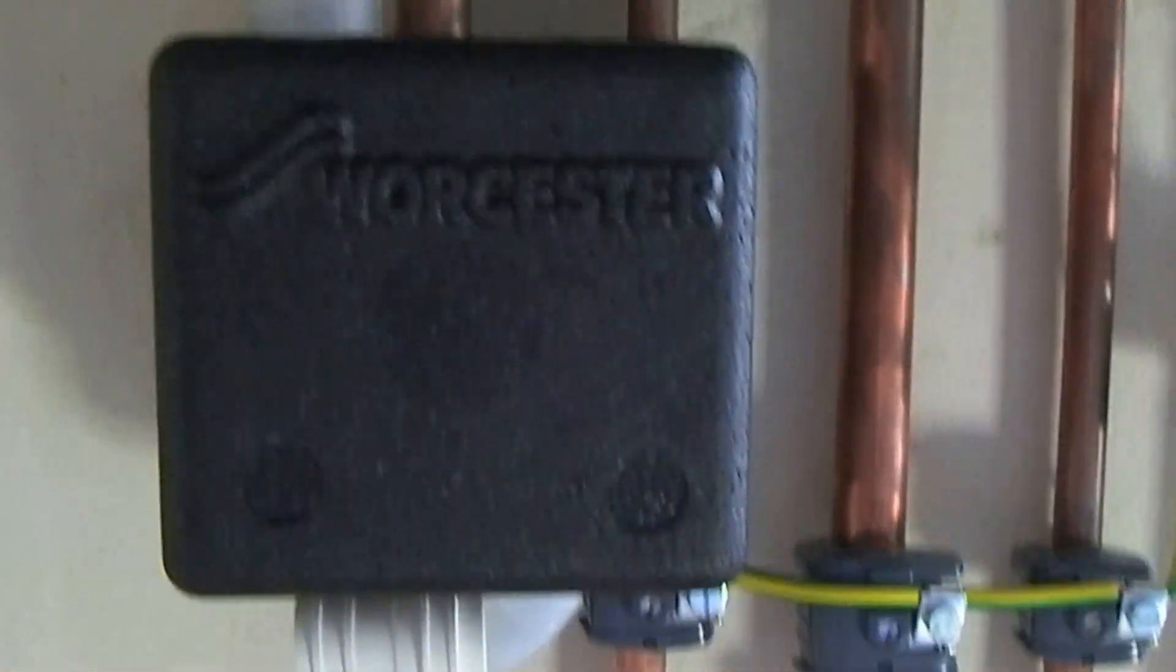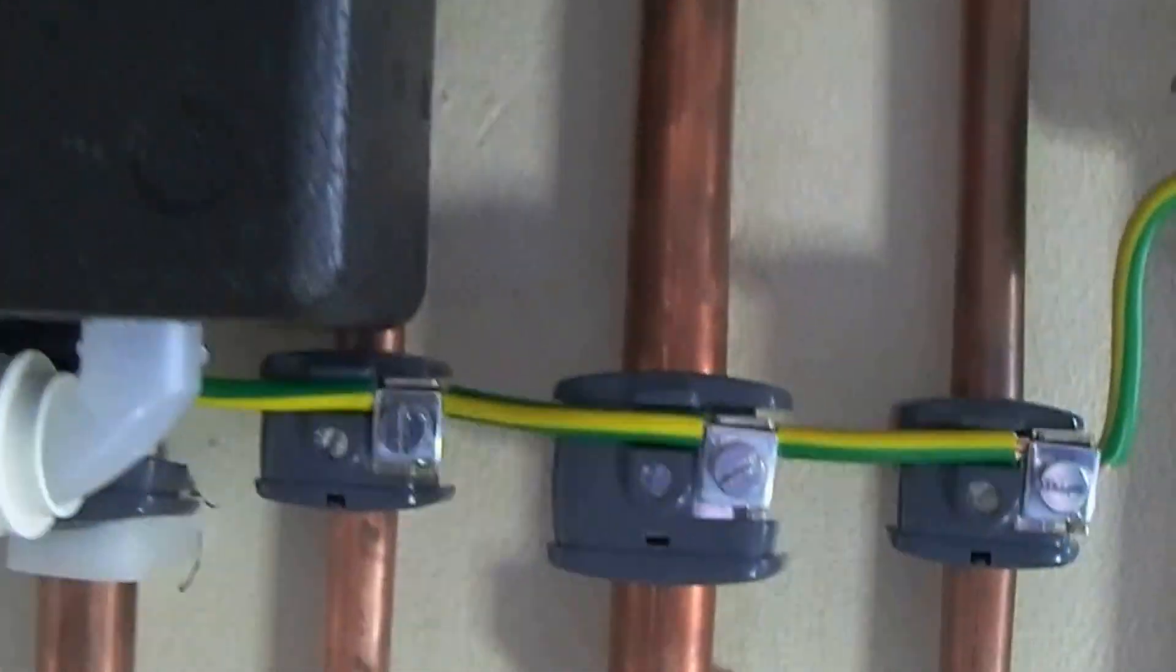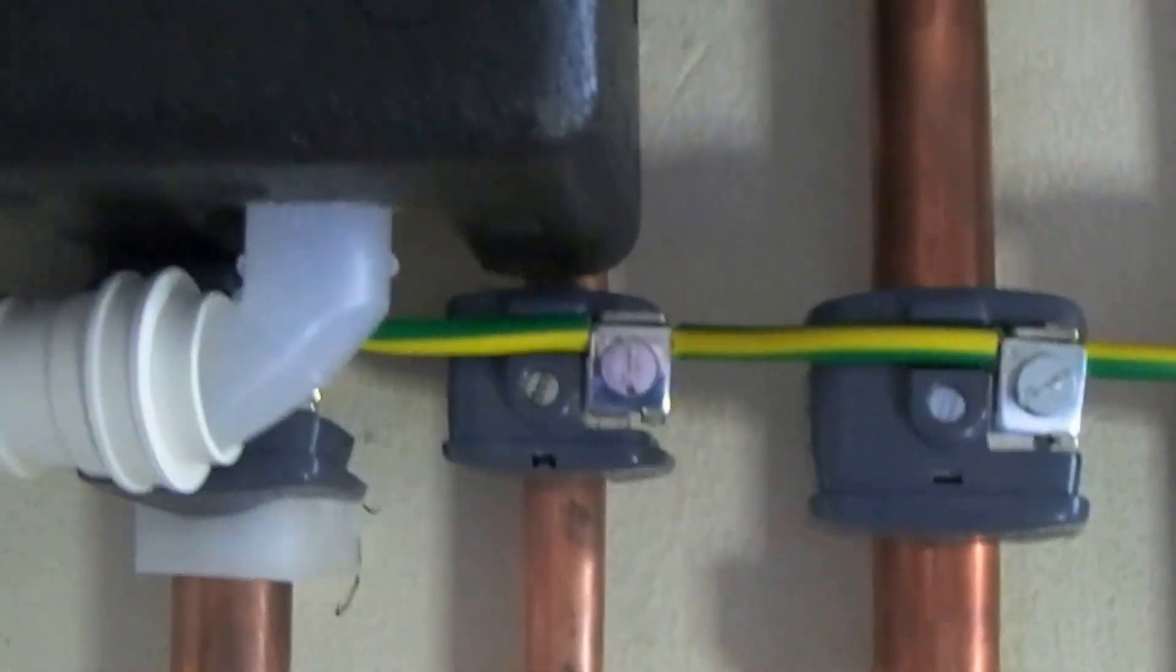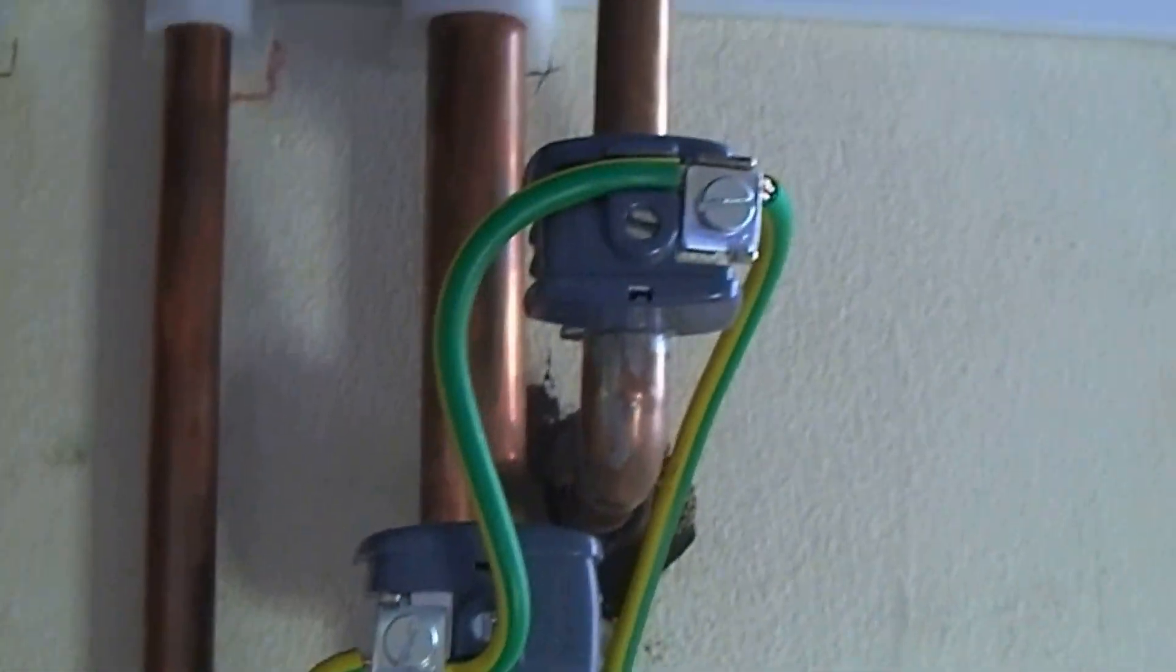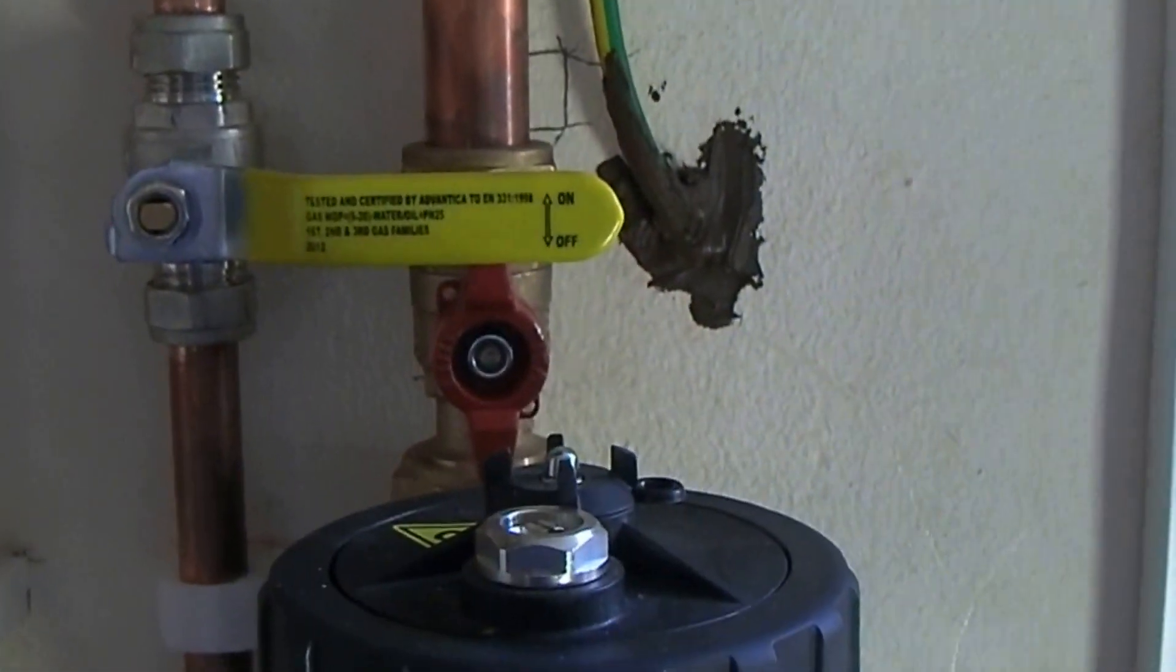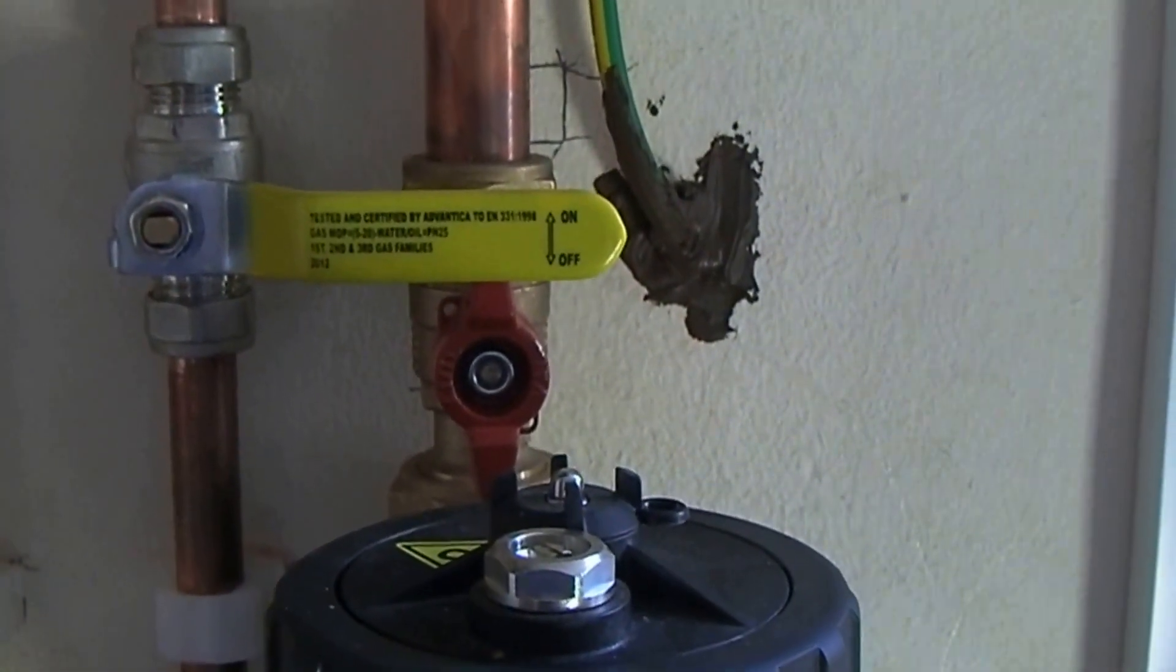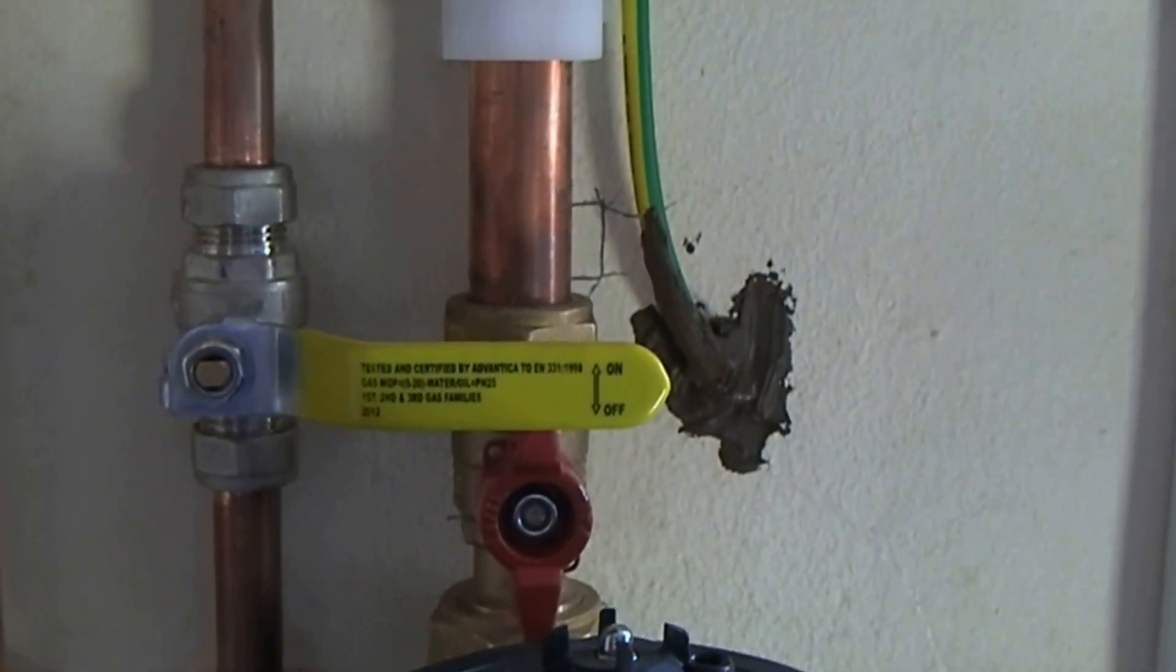The condensate part will be fitted. Here's all the earth clamping I talked about the other day—I think that looks quite neat. Obviously I've run that through out to the gas pipe, which then has its own earth connection straight back to the consumer unit.